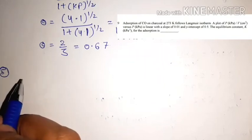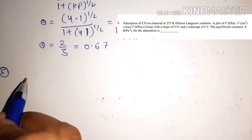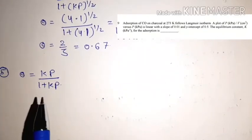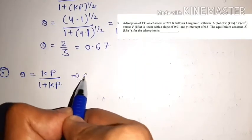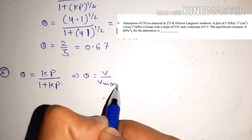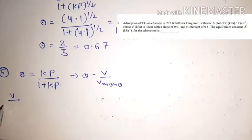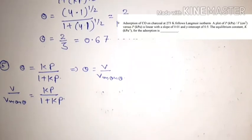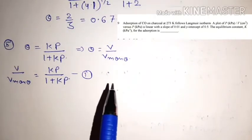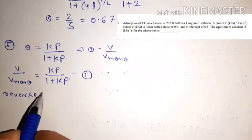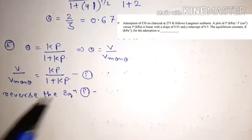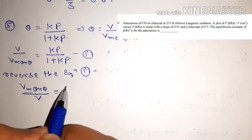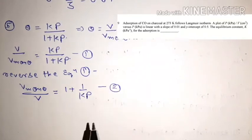For Langmuir adsorption isotherm, θ = Kp/(1 + Kp). Writing θ as v/v_mono gives v/v_mono = Kp/(1 + Kp). Reversing the equation: v_mono/v = 1 + 1/(Kp). Now multiply by p and divide by v_mono to get p/v = p/v_mono + 1/(K·v_mono).